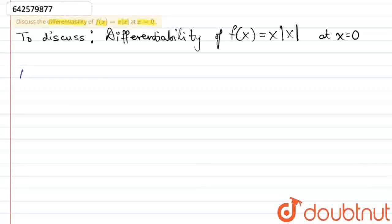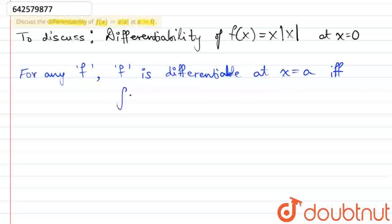Now, for any function f, we will take it to be in the variable x. The function f is said to be differentiable at a given point. Let us assume that this given point is a, under the condition that the left-hand derivative of the function evaluated at a is equal to the right-hand derivative of the function evaluated at a.